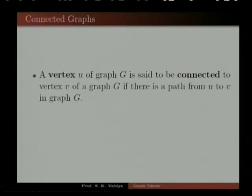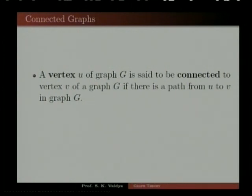Now, one more family of graphs — connected graphs. A vertex U of graph G is said to be connected to vertex V of graph G if there is a path from U to V in graph G.